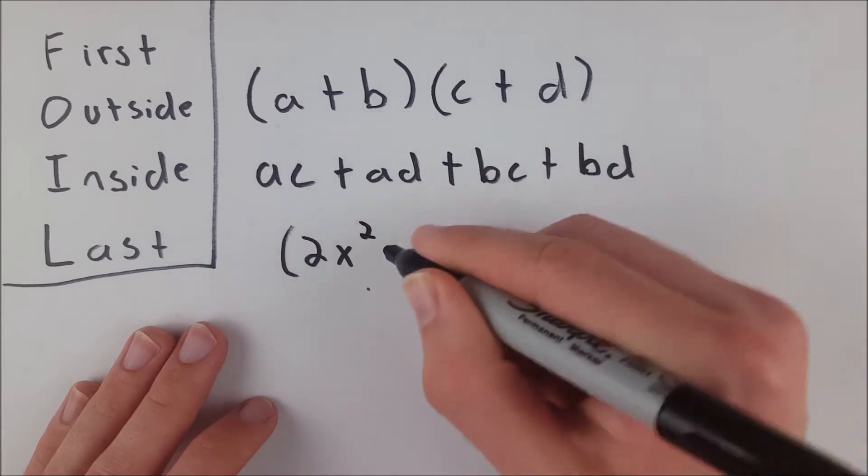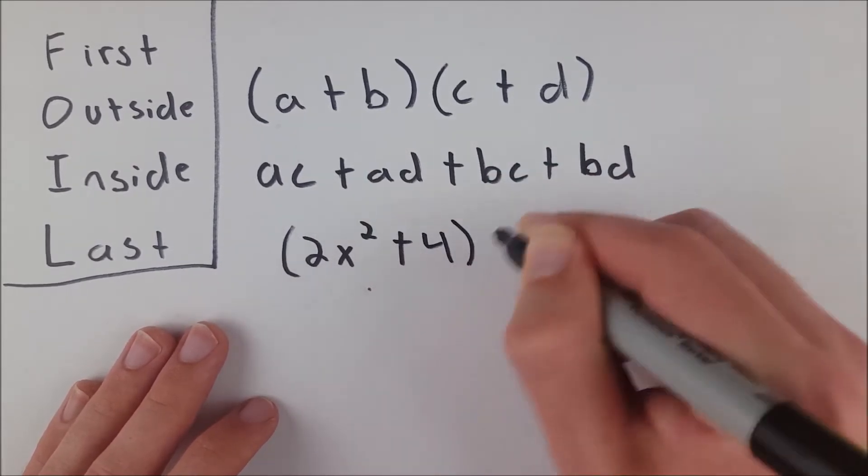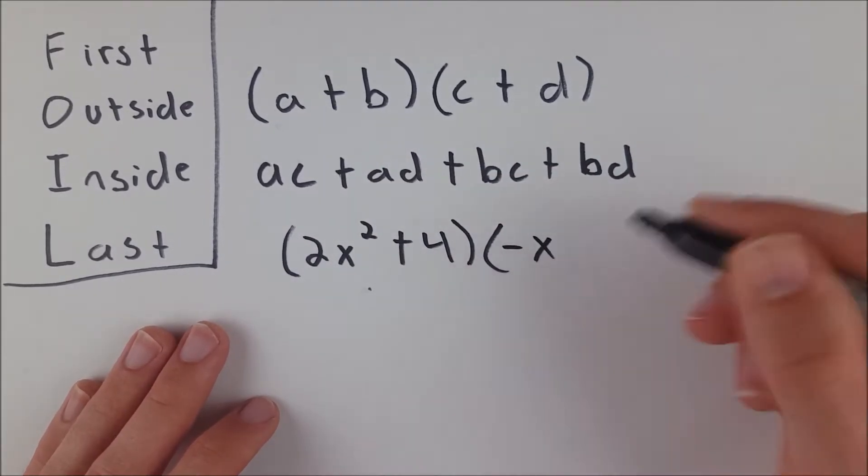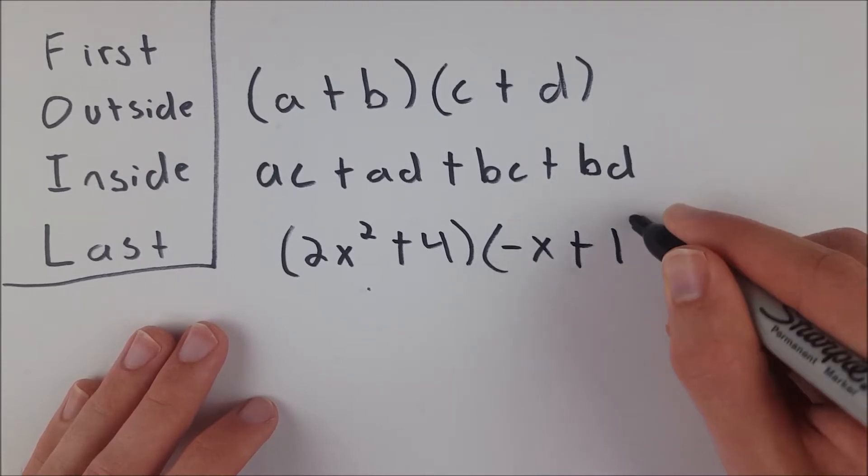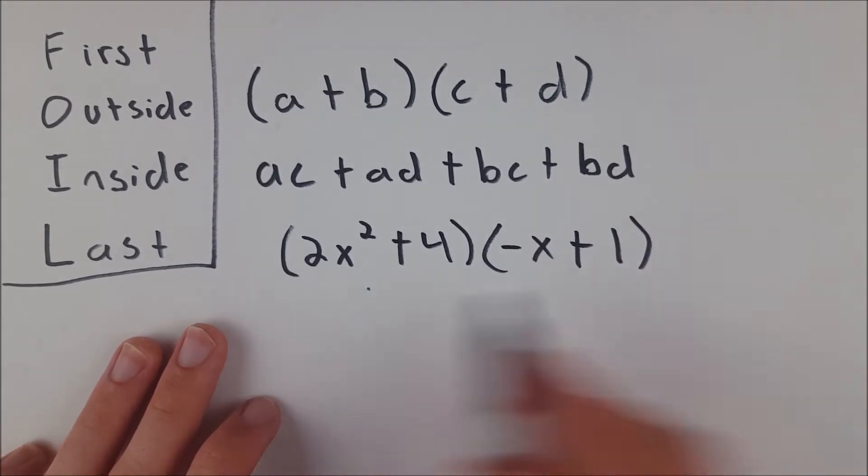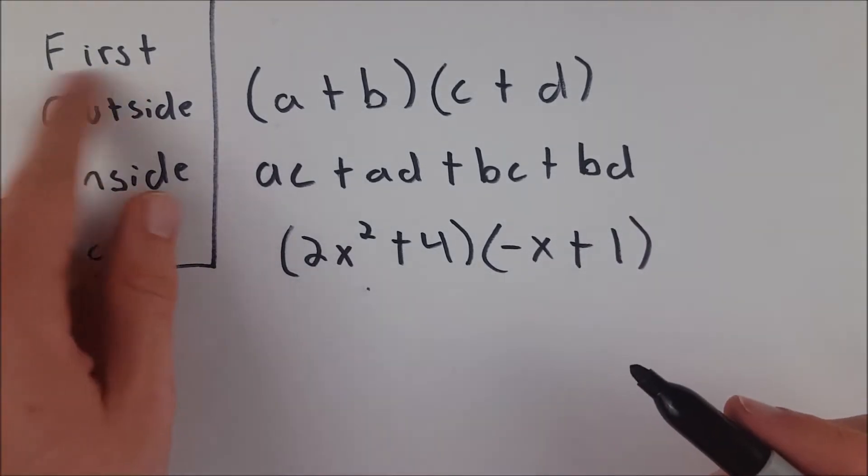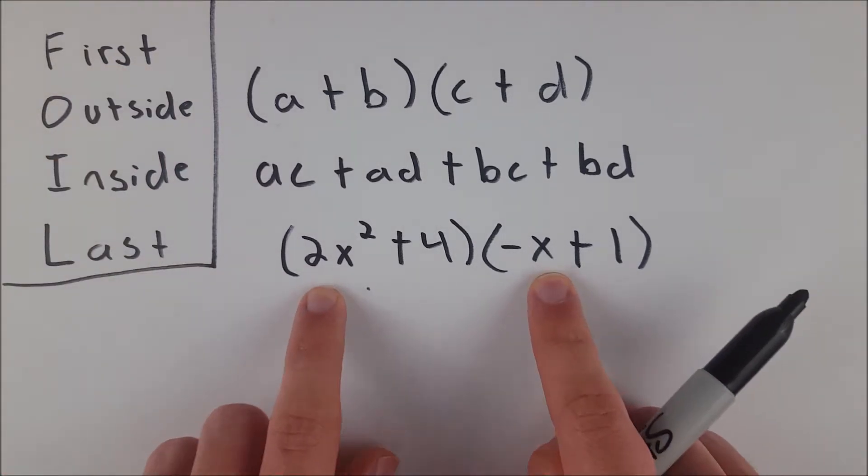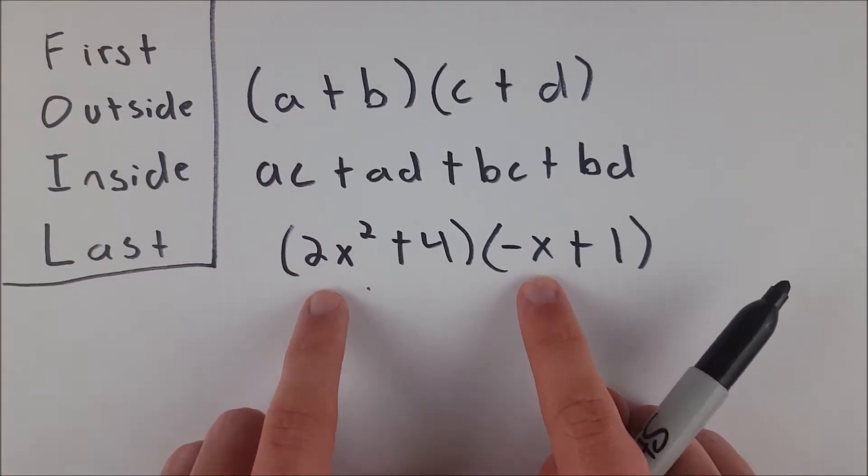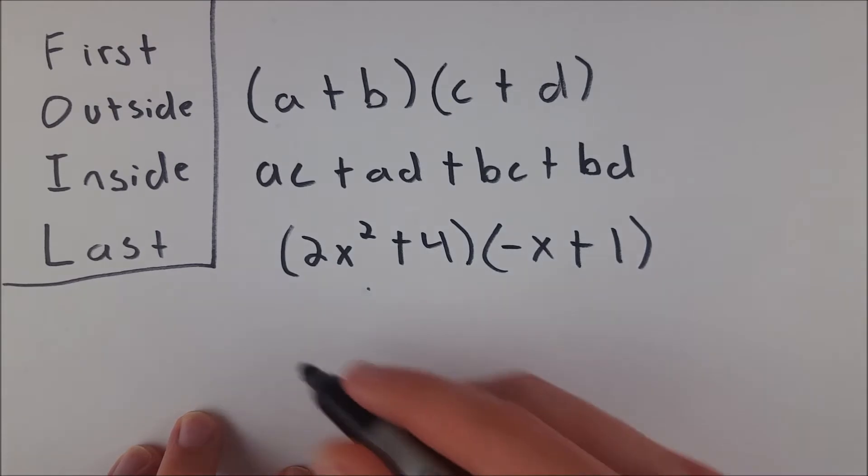Let's say we had 2x squared plus 4 multiplied by negative x plus 1. Using FOIL, we can do this very easily. First, we multiply our first terms. That's 2x squared multiplied by negative x, which gives us negative 2x cubed.